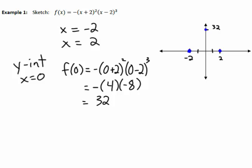Now we determine the shape based on multiplicity. With a multiplicity of two, the graph will bounce — either from below or above. The multiplicity of three tells us the graph will pass through that zero in an S-like shape. We keep those shapes in mind as we finalize the sketch.